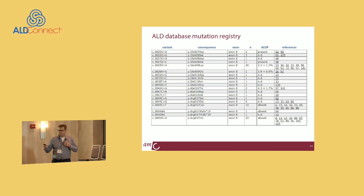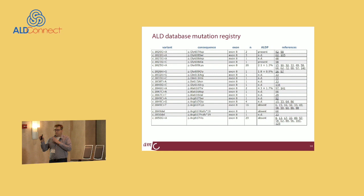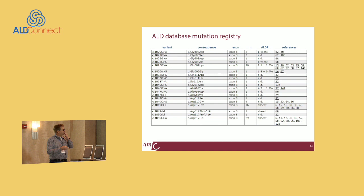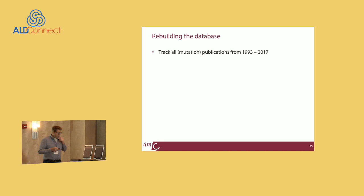Then the state of California contacted me. They had identified potential babies with elevated C26-lysophosphatidylcholine, but when they sequenced the gene, they identified a VUS. Sometimes I could help them, but often we had no idea what to do. There was a clear need for more information. At a Newborn Screening Meeting in January, during my presentation, I realized this and said: we have a problem.